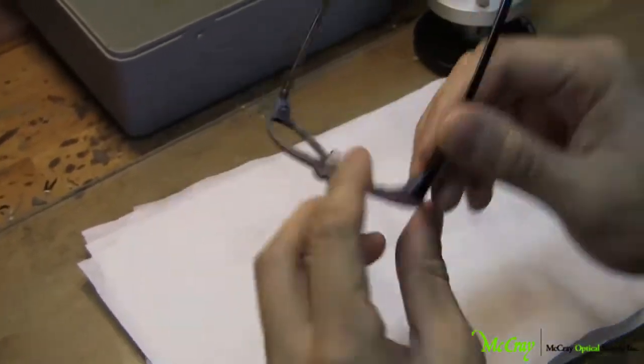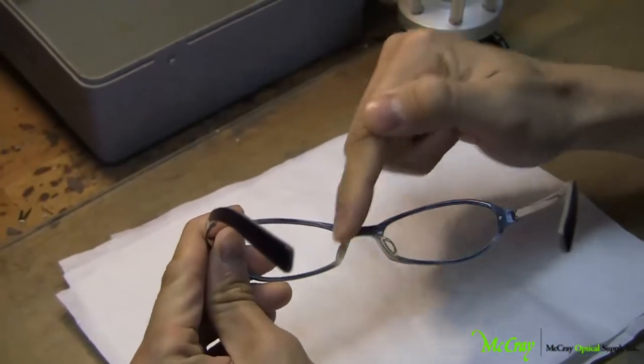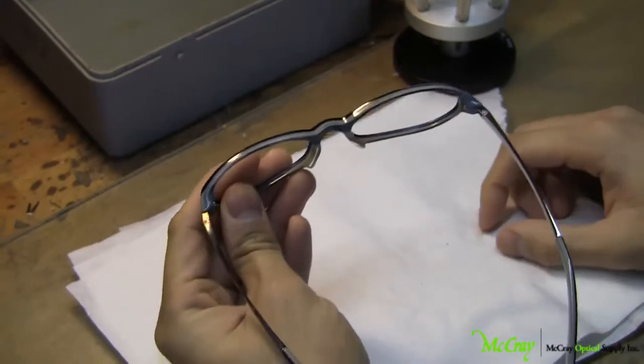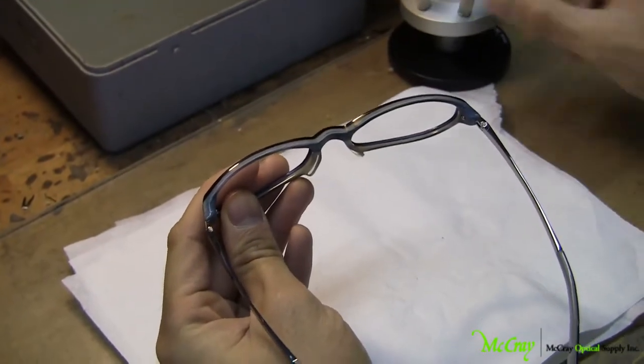The frame today that we've chosen, as you can see, has two points that are quite large, and this is just for nose support. First thing we have to do is to remove the actual temples first.